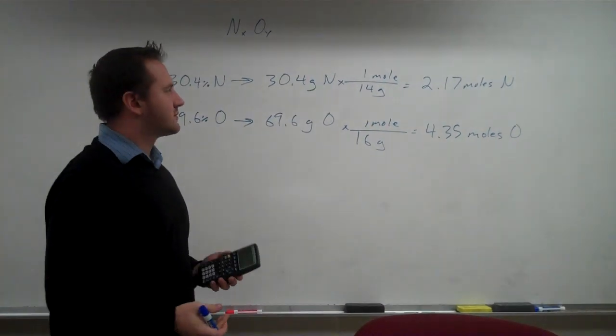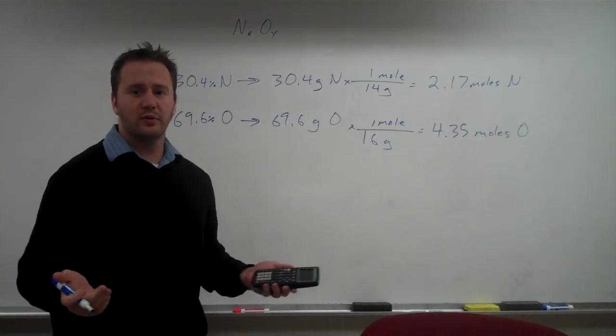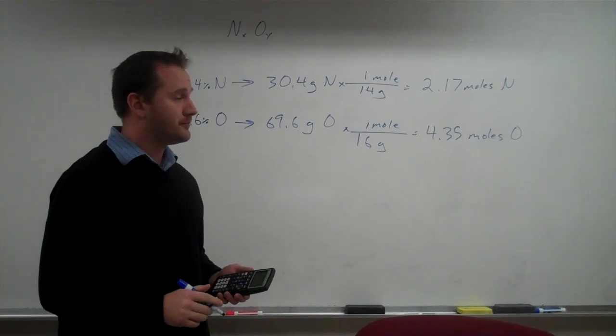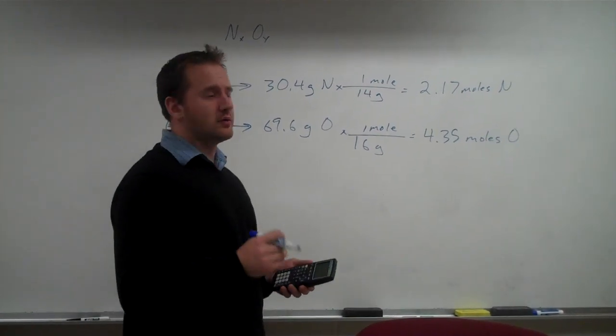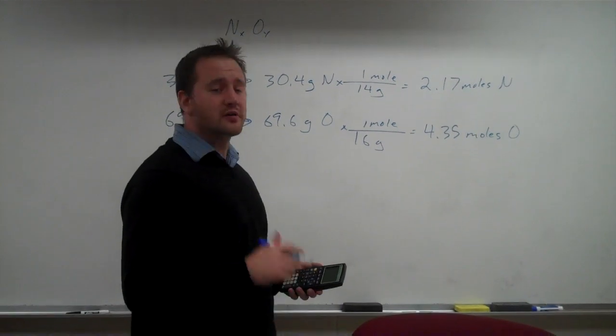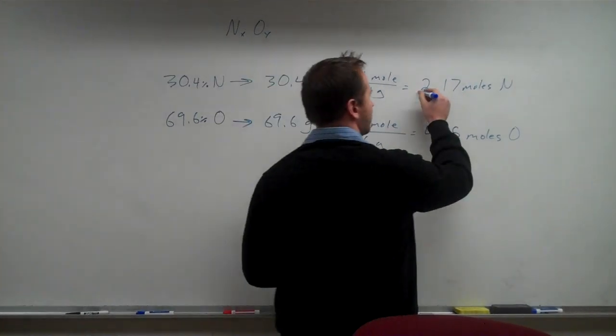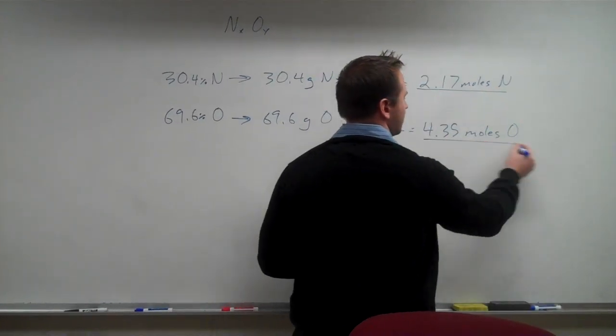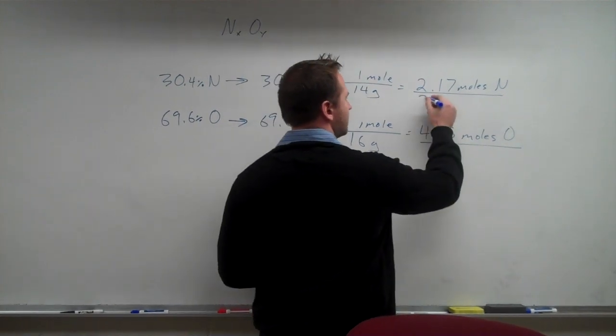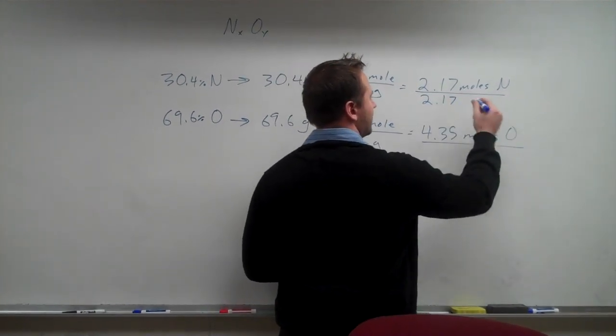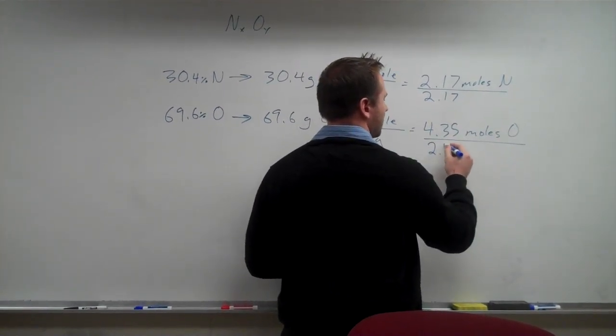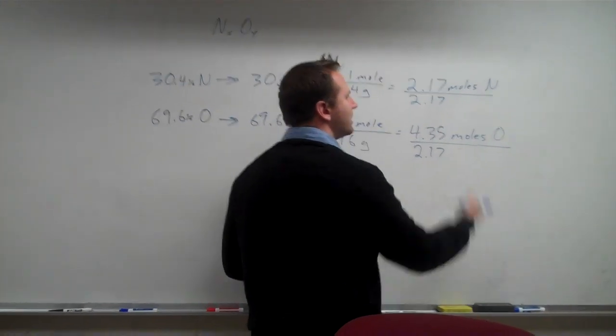So this is a ratio of these two elements, and the goal for empirical formula is to find the lowest whole number ratio. Whenever you're finding the lowest whole number ratio of two substances, you always divide by the lowest number available. The lowest number available out of these two is 2.17, so we divide both by this number to give us a reference point for our ratio.